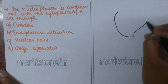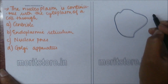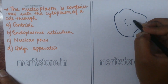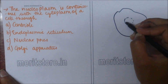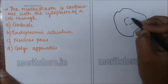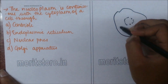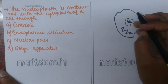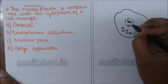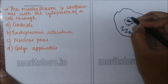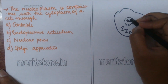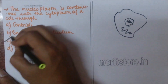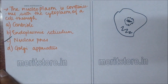The cell consists of a matrix called cytoplasm and a nucleus with nucleoplasm. There are many nuclear pores through which the cytoplasm and nucleoplasm are continuous with each other. So option C is the correct answer.